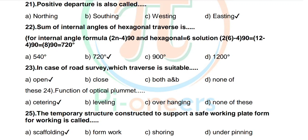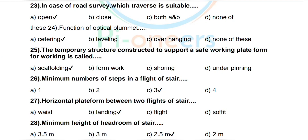Question 25: A temporary structure constructed to support a safe working platform during construction is called — options: scaffolding, formwork, shoring, underpinning. Correct answer: scaffolding. Question 26: Minimum number of steps in a flight of stairs — options: 1, 2, 3, 4. Correct answer: 3.